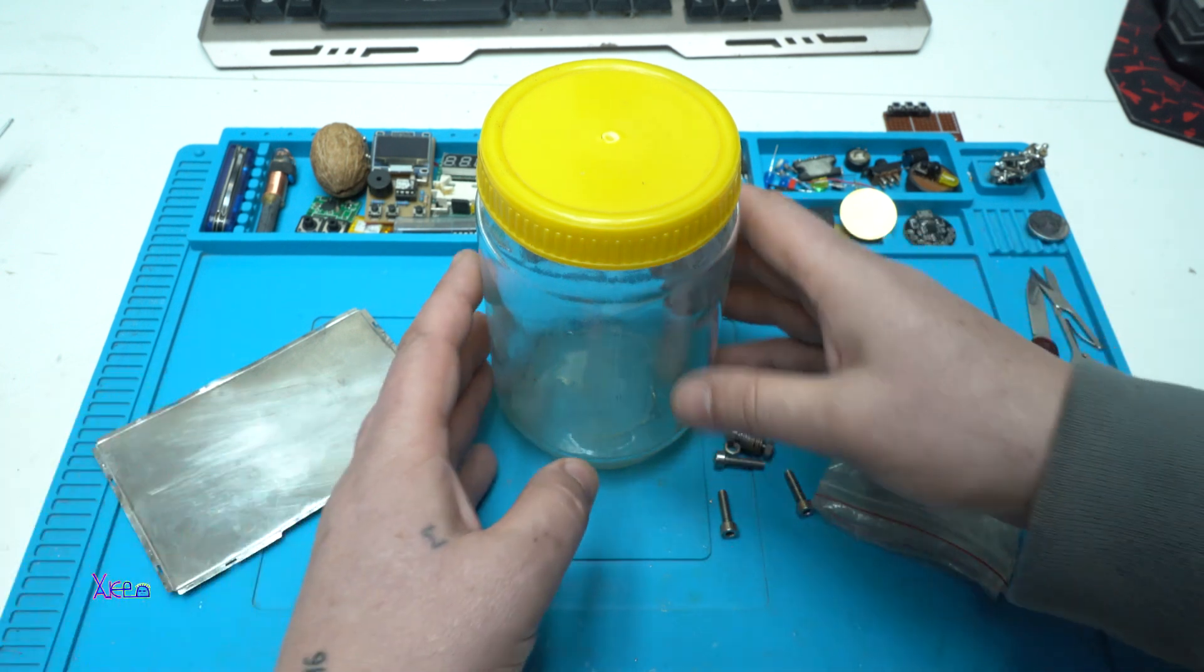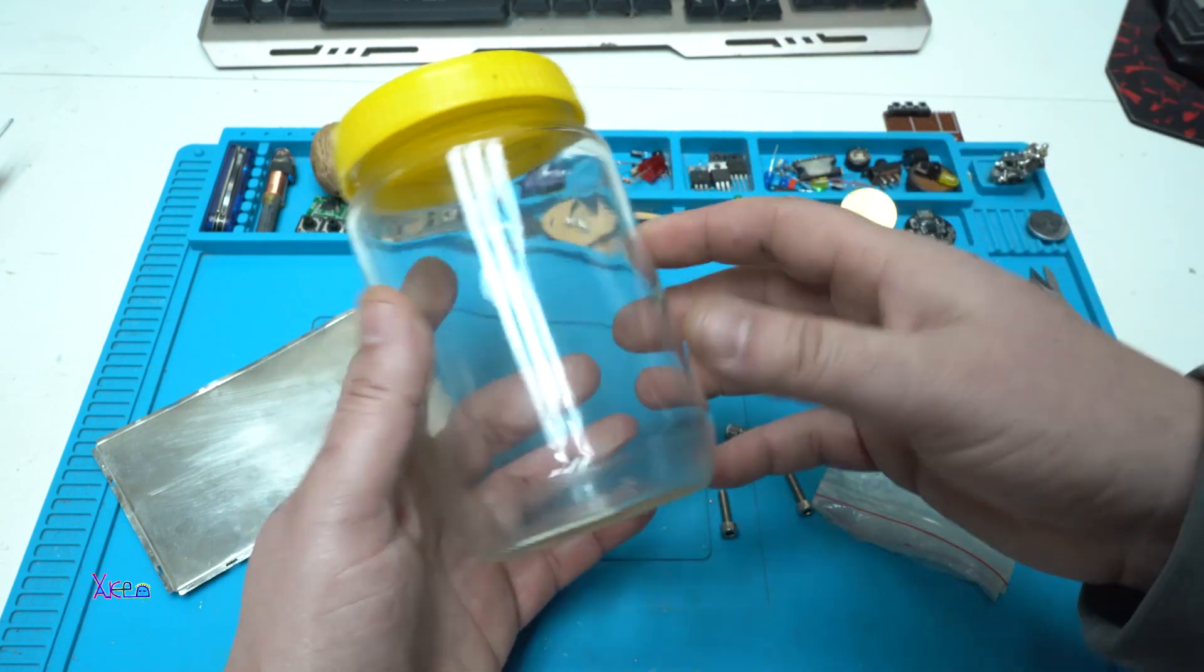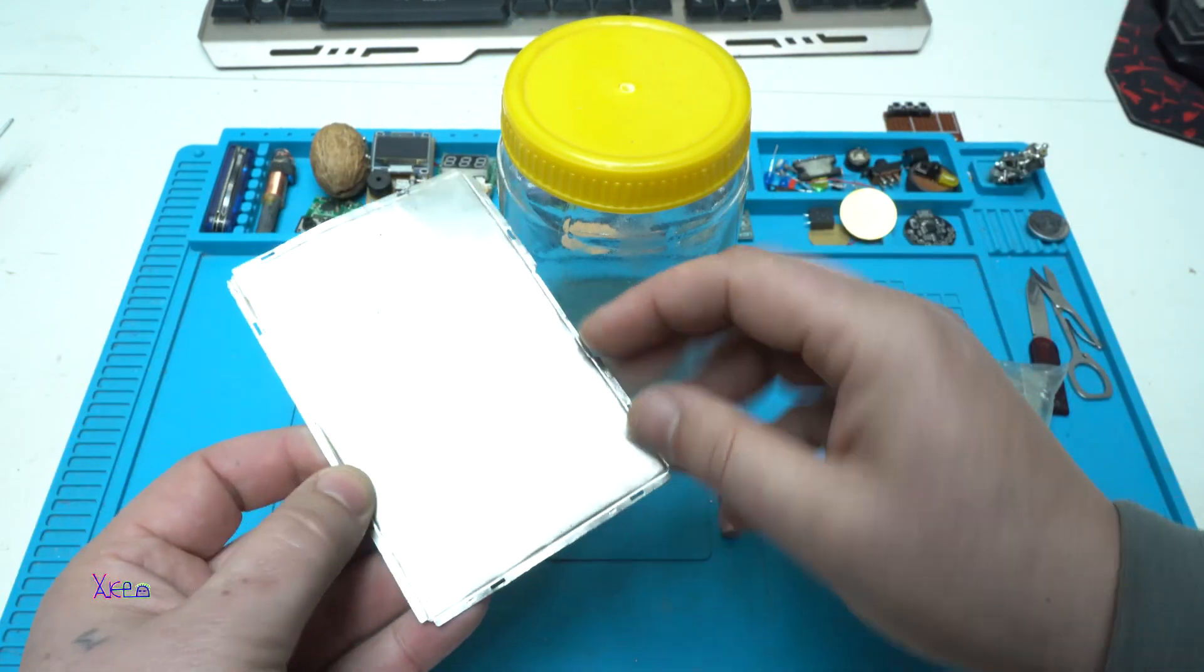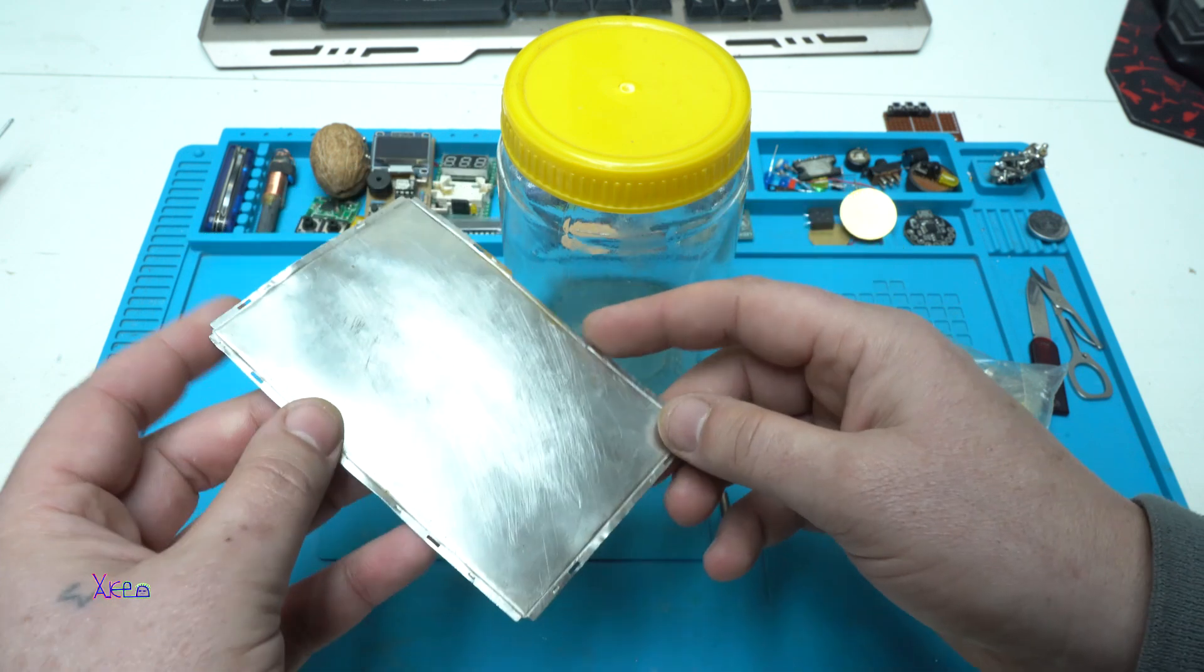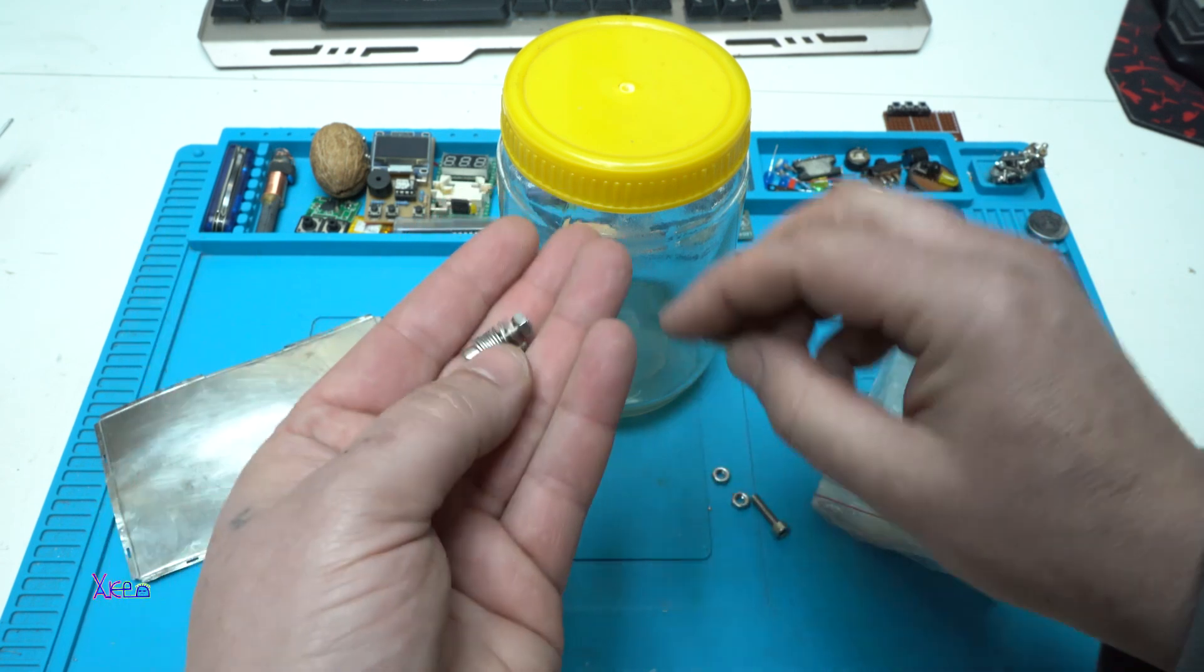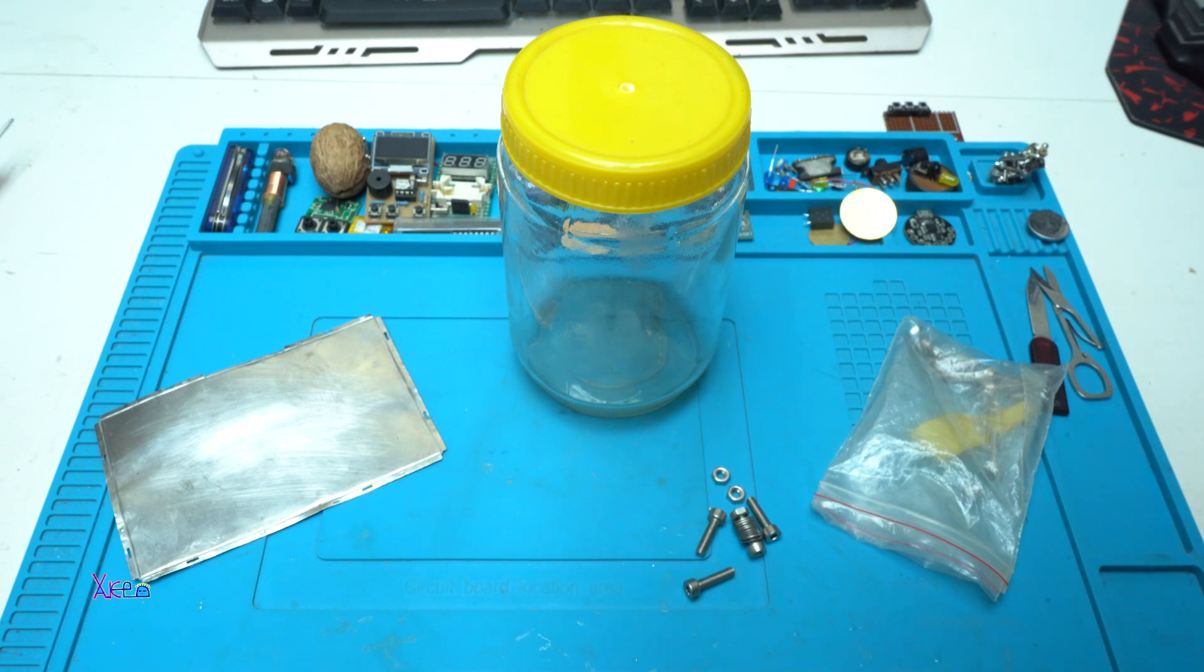In this video I am going to show you how you can make a simple HHO generator using this glass jar with plastic lid. You need this kind of metal piece. It's a stainless steel metal. And we are going to use some stainless steel screws and nuts. Let's start building.